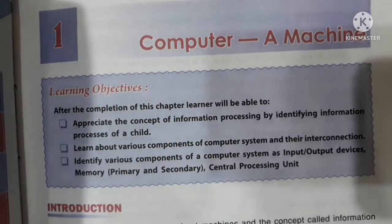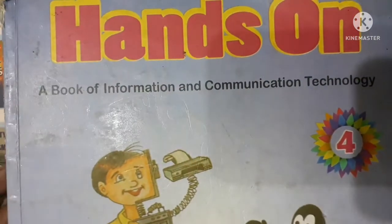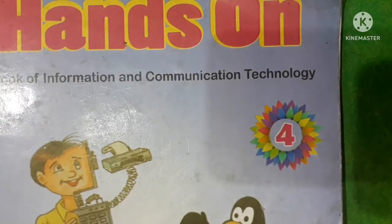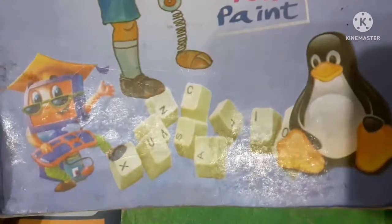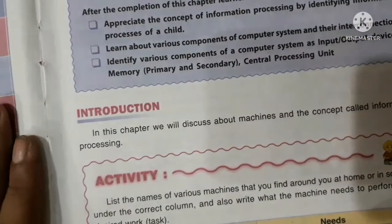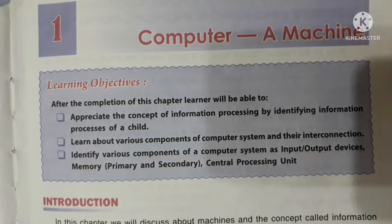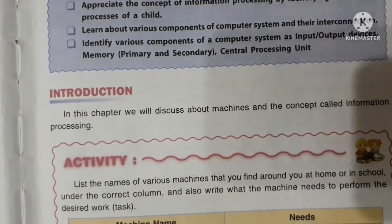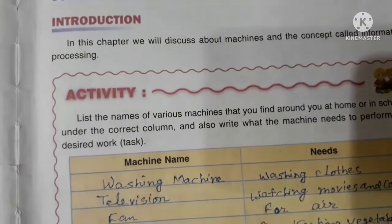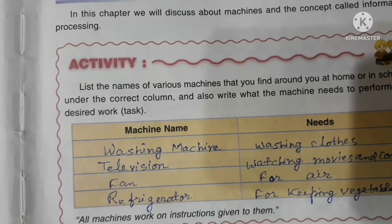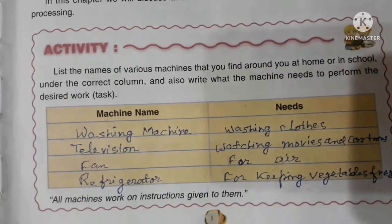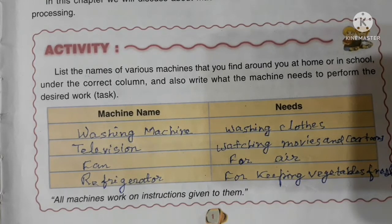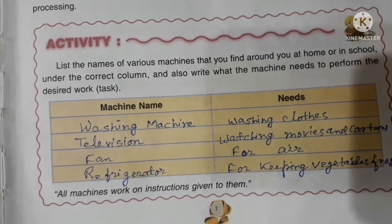This video is for Class 4 Computer Hands-On, a book of Information and Communication Technology for Class 4. As you know about machines, today we'll discuss the computer as a machine. In this chapter, we'll discuss machines and the concept of information. Some examples of machines: washing machine for washing clothes, television for watching movies and cartoons, fan for air, and refrigerator for keeping vegetables.